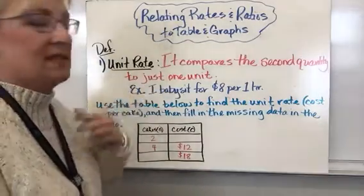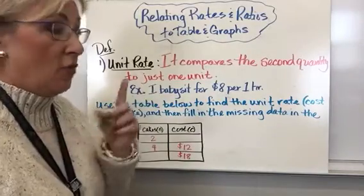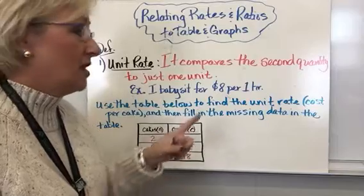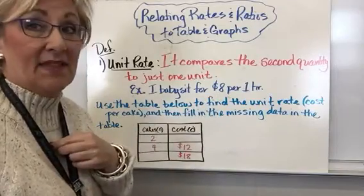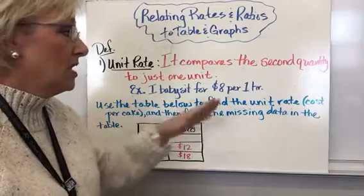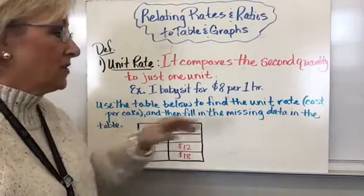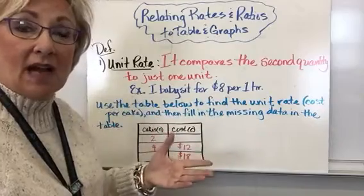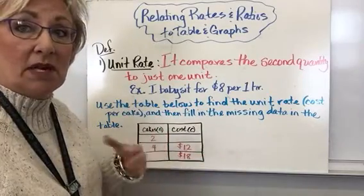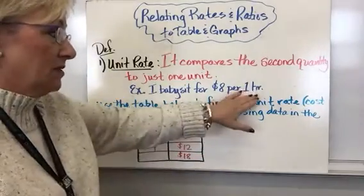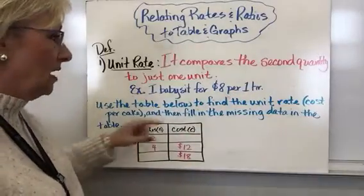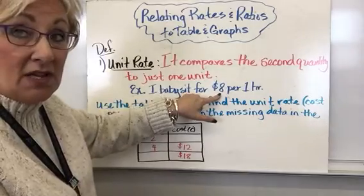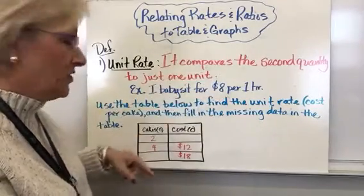For example, I babysit for $8 per hour — for one hour. So if somebody knows they're going to be gone for five hours, they know they can multiply five times eight and that's going to give them the total cost to pay me to babysit. The one-hour rate is $8, and from there I can find out anything I want depending on how many hours. The hours are the changing number; the $8 is the steadfast number because it's never going to change — unless I go up maybe next year.